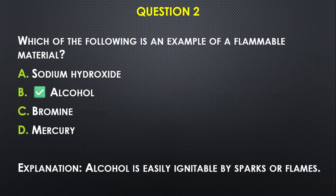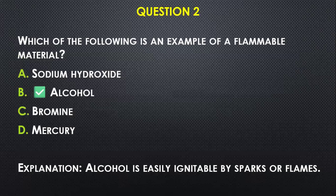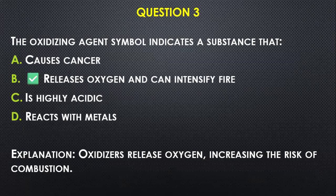Question number two: Which of the following is an example of a flammable material? A flammable material is something that can catch fire. Options: A) sodium hydroxide, B) alcohol, C) bromine, D) mercury. I would put alcohol because it easily catches fire whenever there are sparks or flames around.